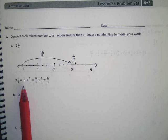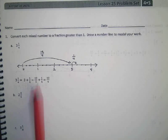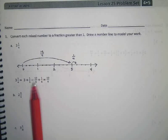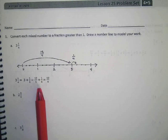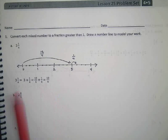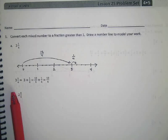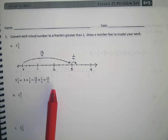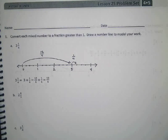So they said 3 and 1 fourth is equal to 3 plus 1 fourth. Do you guys agree? Yep. And then they said 12 fourths plus 1 fourth equals 13 fourths. So think about what you were just doing. It's the same thing but going the opposite way, right?